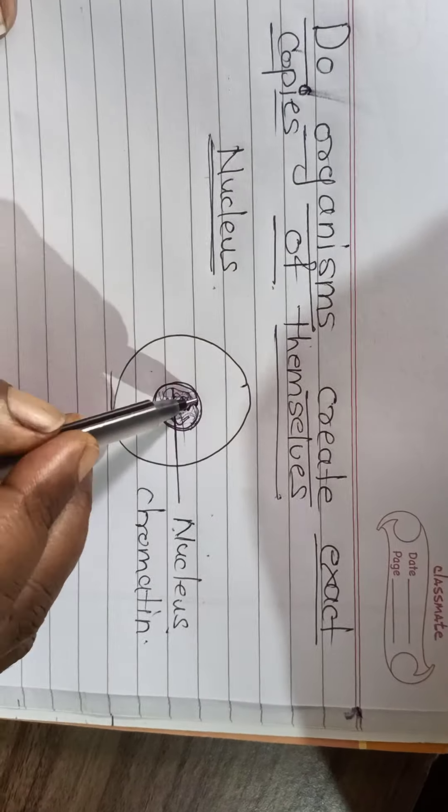Students, in Class 9 you have seen the chapter on the cell. In that chapter there was a very important part of the cell called the nucleus. I hope you remember this nucleus, which is present in the middle of the cell. This nucleus contains chromatin material.